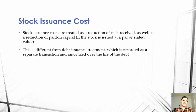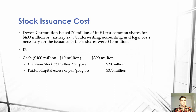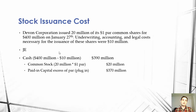Looking at the journal entry, we would originally receive $400 million from the issuance of the stock, but we paid $10 million in underwriting, accounting, and other issuance costs. So we're only going to debit cash for $390 million — we subtract out the $10 million. Then, since we issued 20 million shares, we multiply that by the $1 PAR value and credit common stock as we normally would. The remainder goes into paid-in capital in excess of PAR.